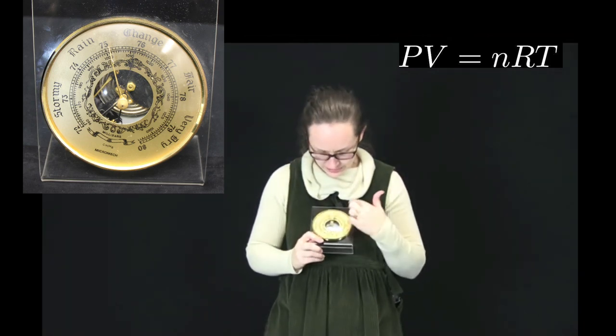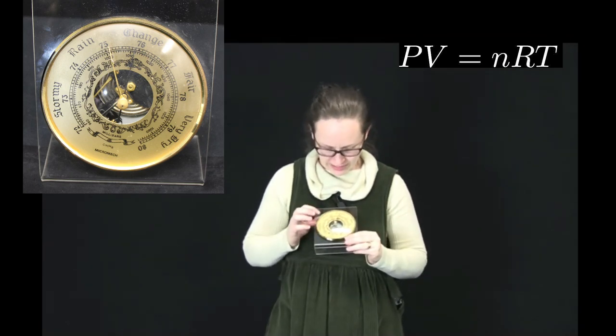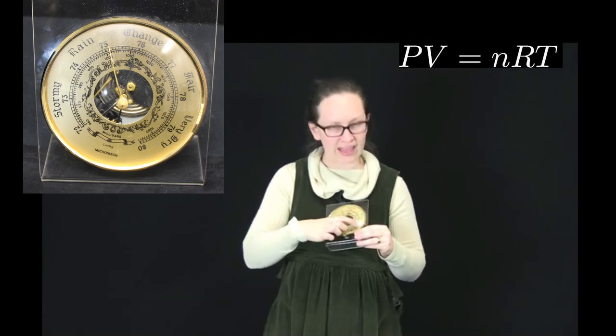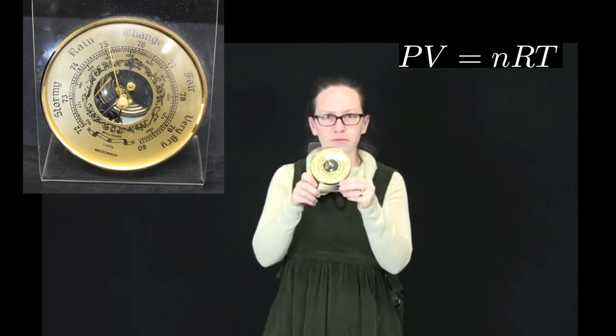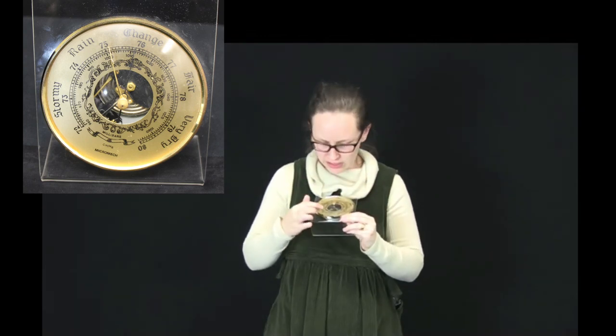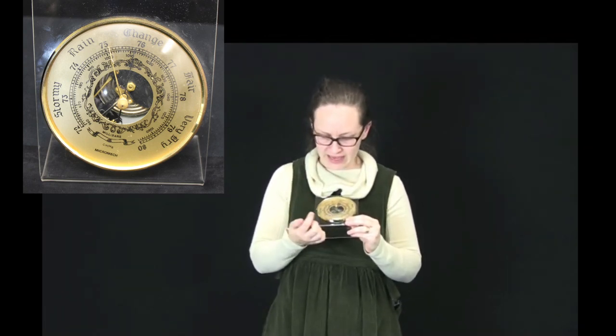In the barometer, around it you can see we've got stormy, rain, change, and very dry. So it's warning us that there's a change of weather along the way. There's other units for pressure here as well. We've also got millibars and centimeters of mercury. Centimeters of mercury were the traditional unit for pressure because of that traditional barometer, the traditional way of measuring pressures.